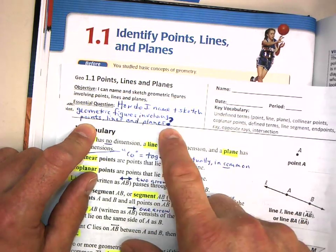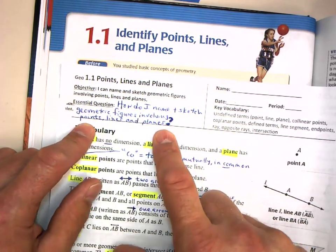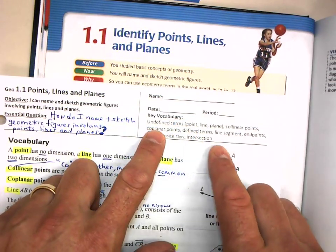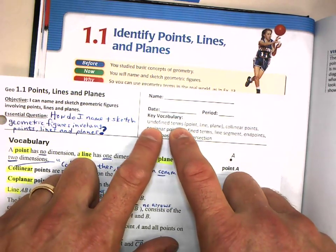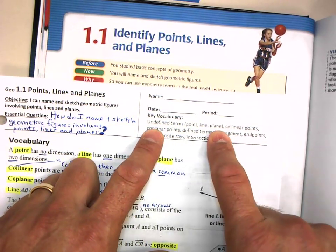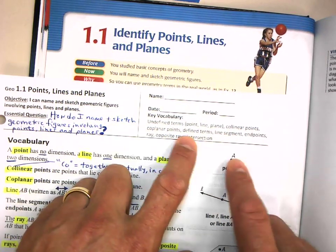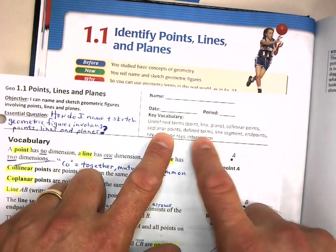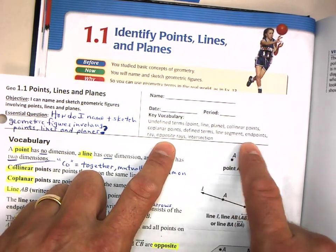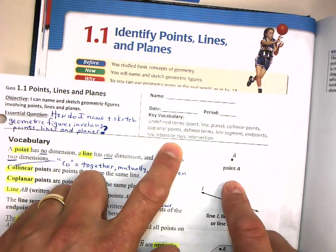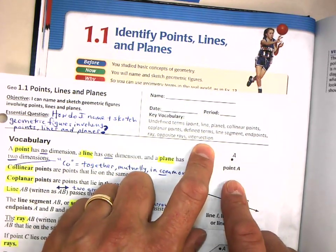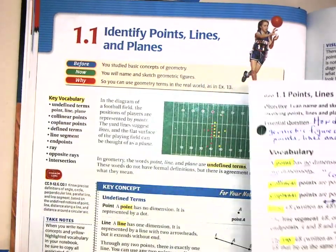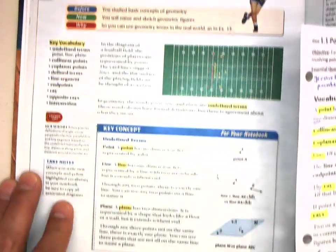Let's look at the key vocabulary coming up. We have undefined terms such as point, line, and plane. We also have defined terms such as collinear points, coplanar points, line segment, endpoints, ray, and opposite rays. This section will build to a summary of all the key vocabulary.